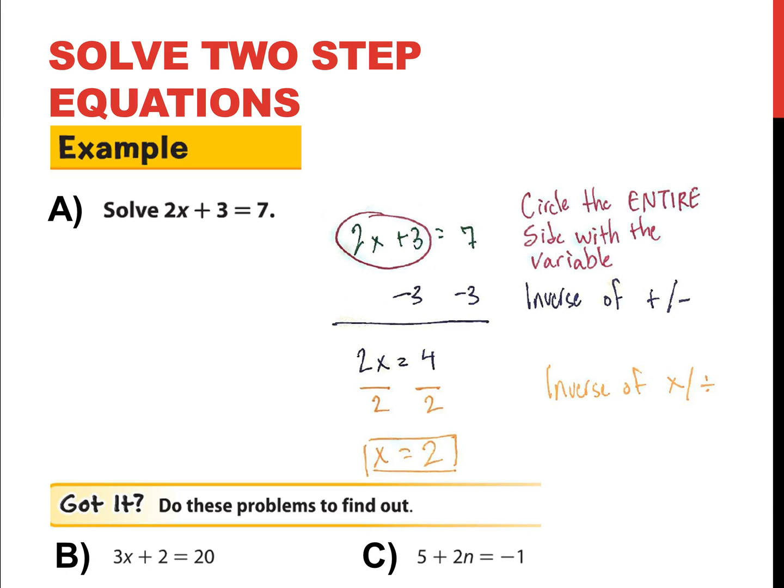So I have two problems for you guys to practice on. The first one is example B, and that's 3x plus 2 equals 20, or 3 times x plus 2 equals 20. And example C, 5 plus 2n equals negative 1, or 5 plus 2 times n equals negative 1. Go ahead and do these examples the same way that I did in example A, or these problems B and C. And I'll go ahead and pause the video. I'll be here when you get back.